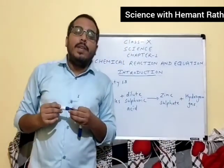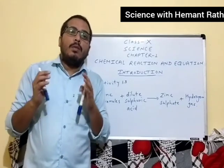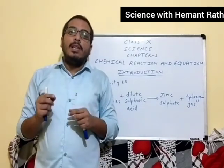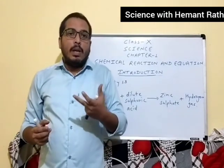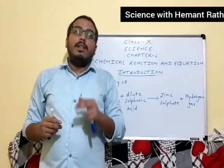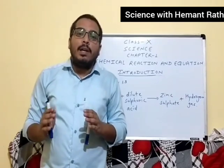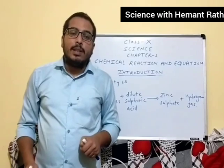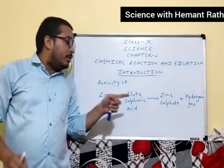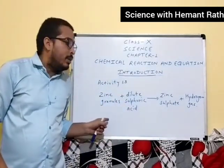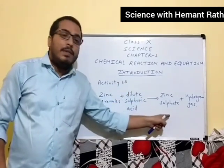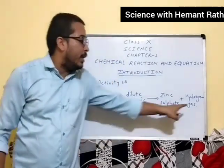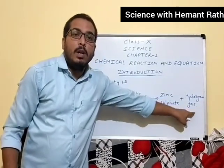According to Activity No. 1.3, we will take a small amount of zinc granules into a conical flask, and in the conical flask we will add a small amount of dilute sulphuric acid. When we add dilute sulphuric acid to zinc granules, zinc sulphate will be formed and a gas will be evolved, that is called hydrogen gas.